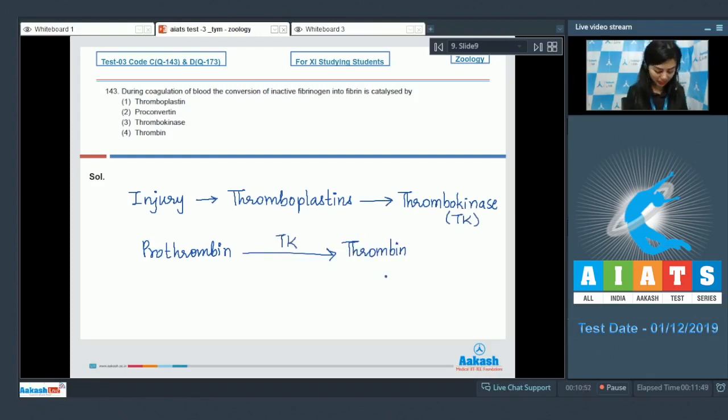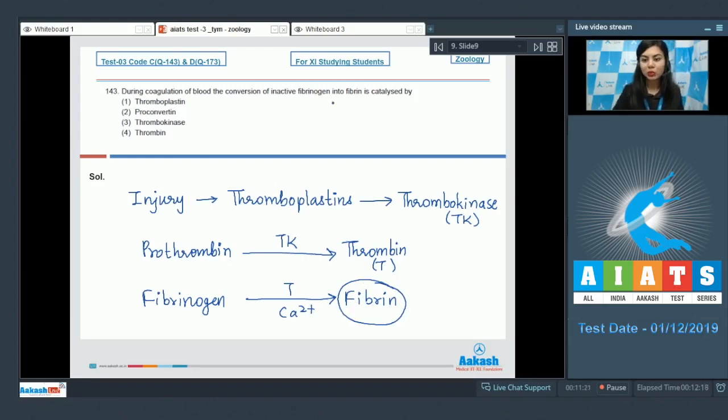And this thrombin is an enzyme which will convert soluble fibrinogen into insoluble fibrin. Calcium ions are required for this conversion. This fibrin forms a network of threads which will stabilize the blood clot. Thus we see fibrinogen is getting converted into fibrin by the action of thrombin. The correct option here would be option number 4, thrombin.